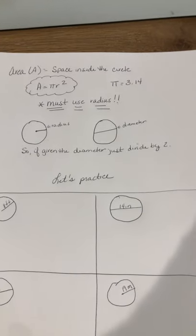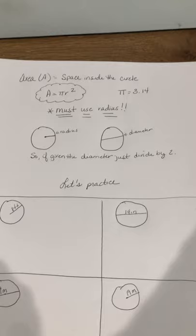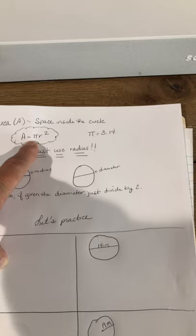Today we're going to talk about area of the circle, and remember that area is the space that's inside the circle. Now our formula here is area equals pi r squared. Let's talk about that for just a moment.